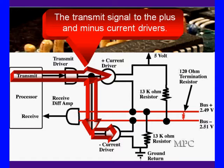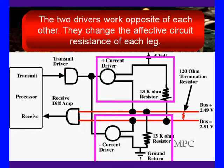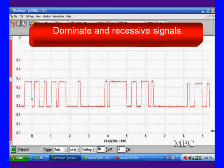When we get ready to transmit, we've got two amplifiers. They're current drivers. They're going to drive plus and minus, and one is going to invert, and one's not going to invert. So what's going to happen? We send a signal to the two drivers, and the two drivers work to the opposite of each other. They change the effective circuit resistance of each leg, meaning they change the voltage drop slightly. Just a few millivolts.